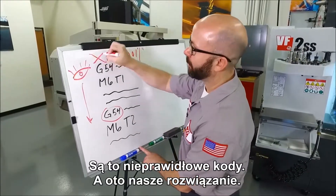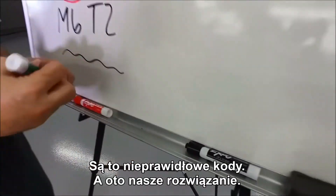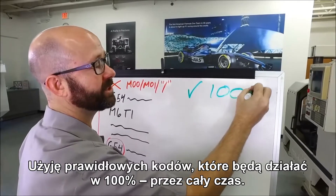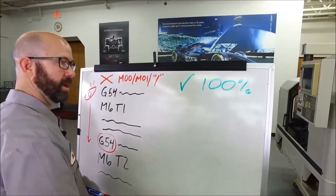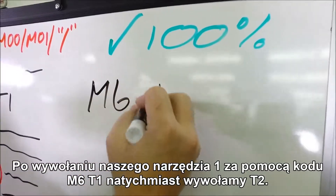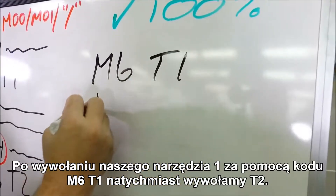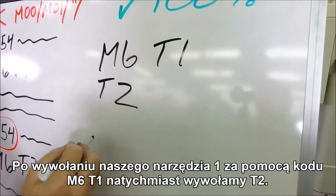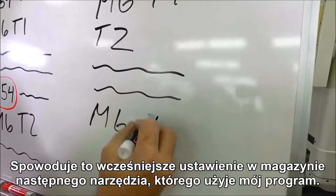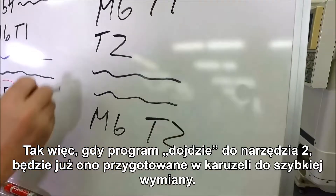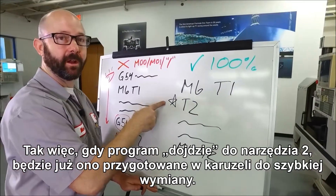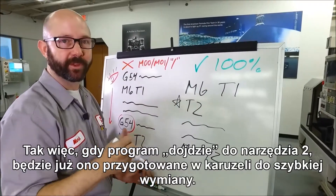This is bad code. Here's our solution. We're gonna use some good code that's gonna work 100% of the time. After we've called up tool one with an M6 T1, we're gonna immediately call a T2. This is gonna pre-stage the next tool that's coming up in my program. So by the time we get to tool two in my program, the carousel already has that tool ready for the fast changeover.